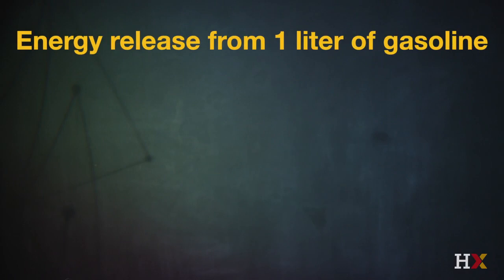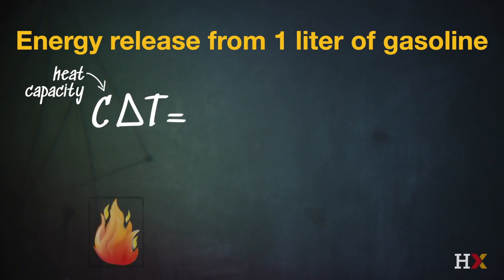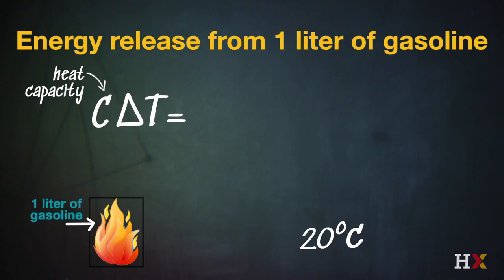The energy release from one liter of gasoline is equal to the heat capacity — the amount of energy per unit change in temperature — times the change in temperature. Let's start with the steel box at room temperature, 20 degrees C, and add gasoline to the flame inside the box, very carefully sustaining the chemical reaction.